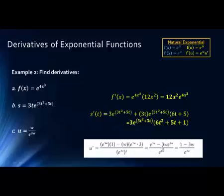Notice each term has e to the 3w in it. If we factor that out, one of them cancels, and we get 1 minus 3w over e to the 3w. This is all algebra at this point — you should be able to work it out.